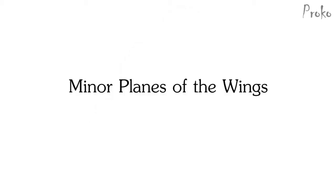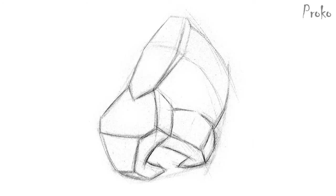The minor planes of the wings. The wings curl into the nostrils similar to the septum, so they each have a wide top plane and a thin side plane. The wings are not paper thin, so an indication of the front planes is crucial to give them some thickness.